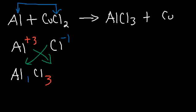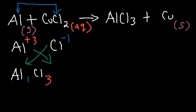As copper is displaced out of the solution it's going to come out as Cu. Aluminum is a solid and copper is in a solid phase. Copper chloride — is it soluble or insoluble? You need to know your solubility rules. Chlorides are usually soluble except with silver, lead, and mercury. So copper chloride is in the aqueous phase, and the same is true for aluminum chloride.